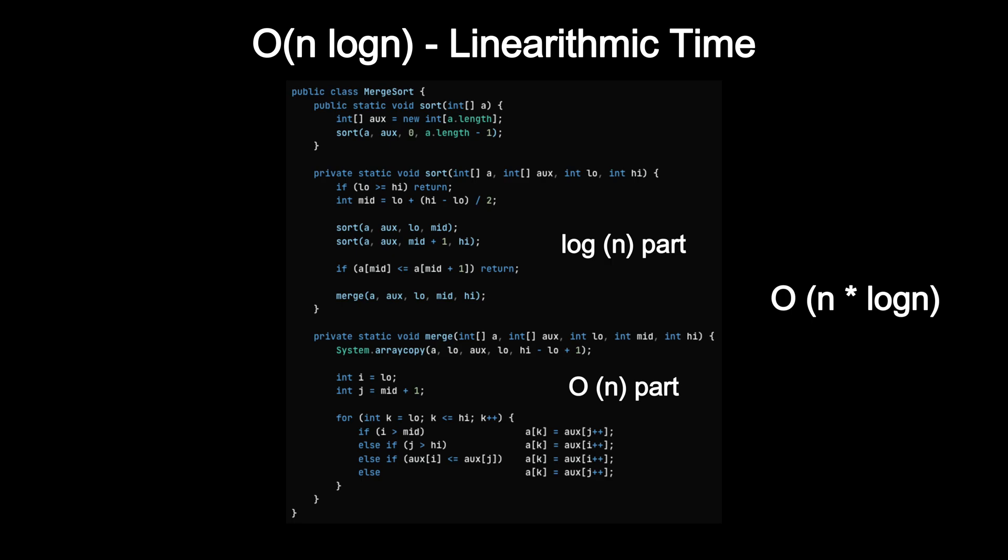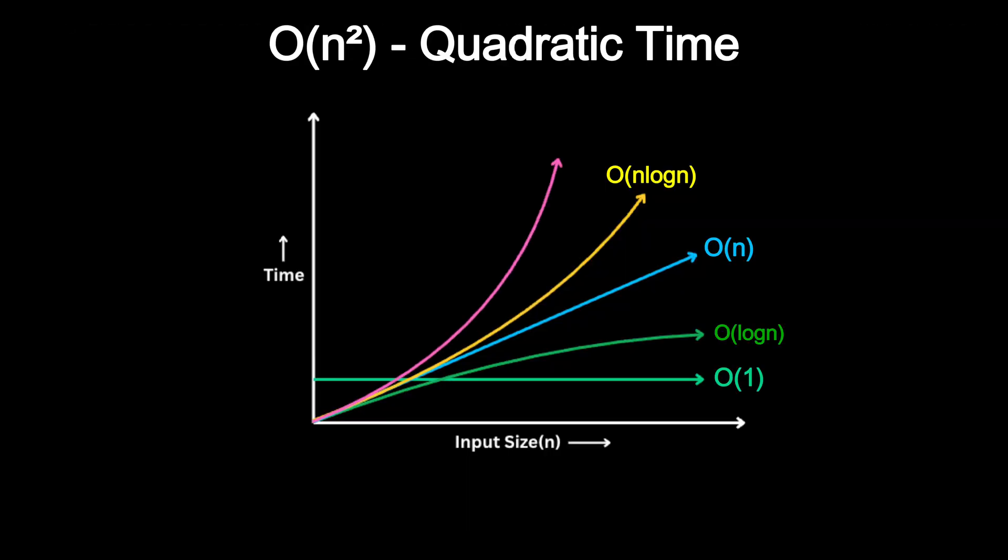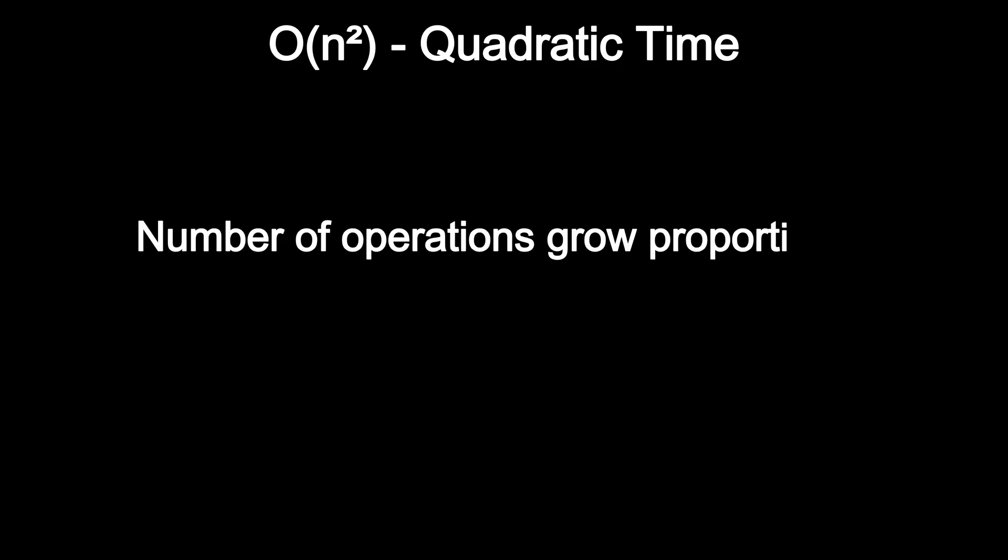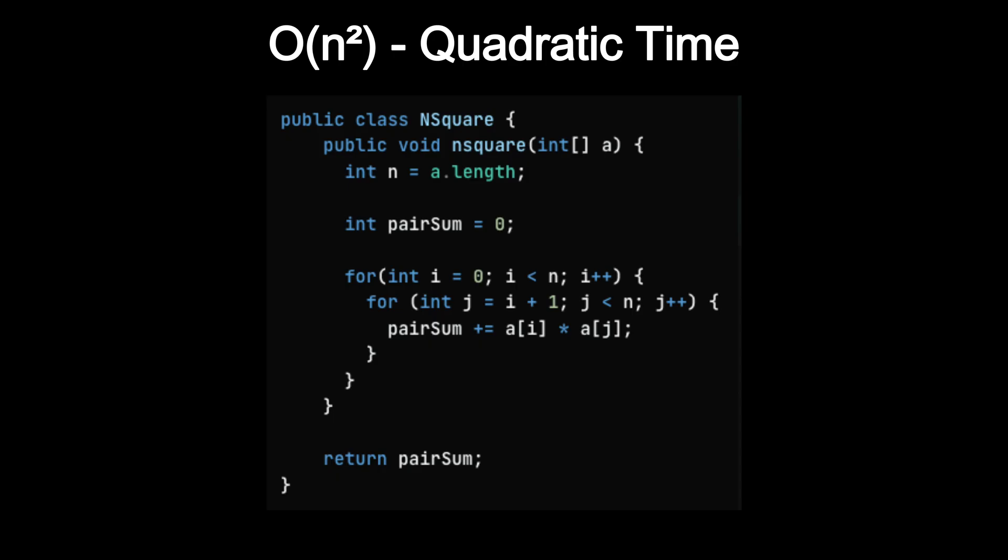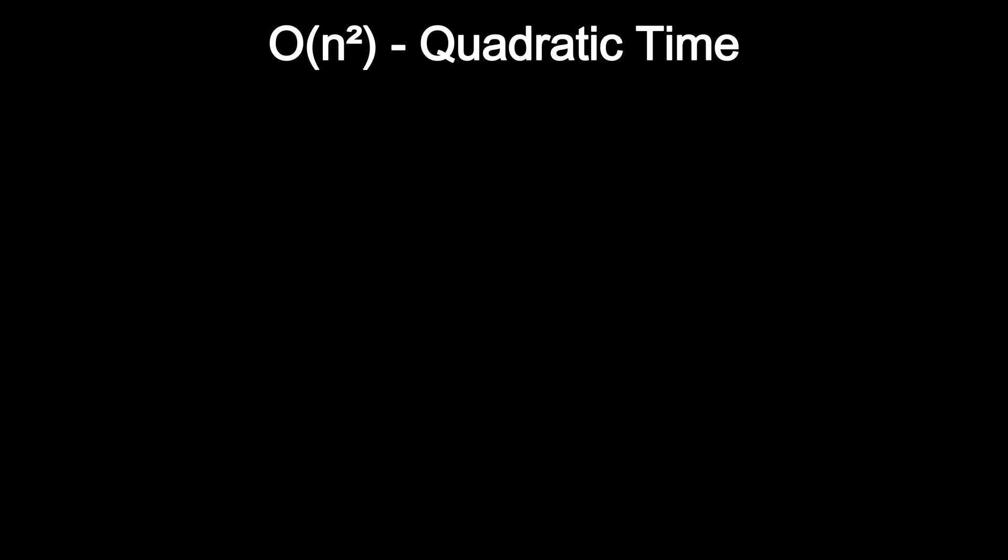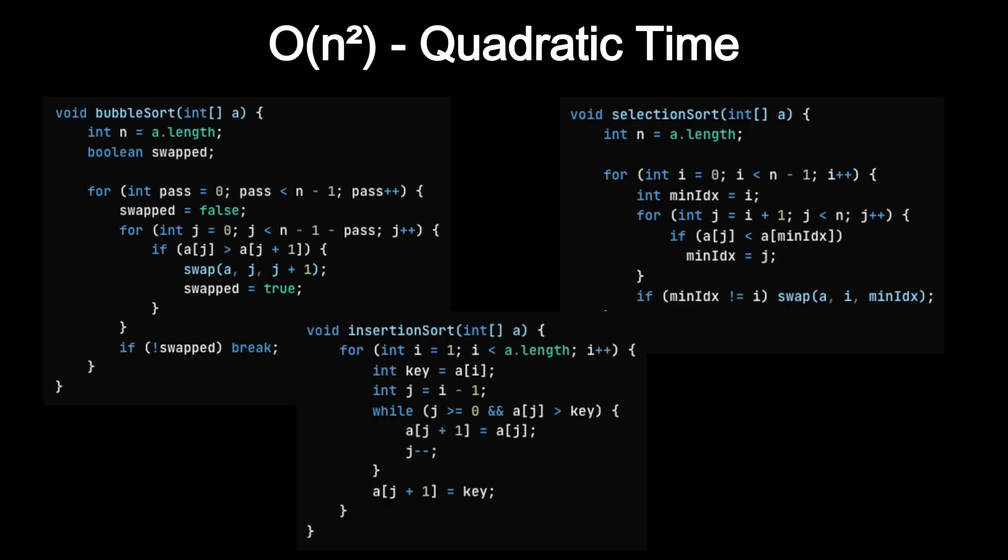Next up, quadratic time or O(n²). This is where things start to get ugly. In an O(n²) algorithm, the number of operations grows proportionally to the square of the input size. So if you have N elements, you perform roughly N times N operations. This typically happens when you have nested loops, where for each element, you iterate over all other elements. Classic examples include simple sorting algorithms like bubble sort, selection sort, insertion sort. All of them compare or swap elements in nested loops, leading to O(n²) behavior.